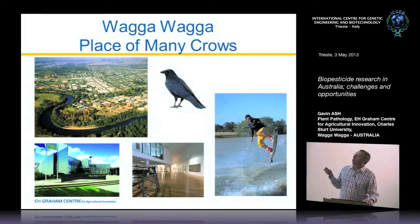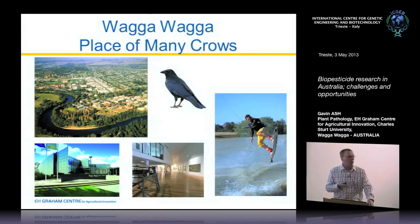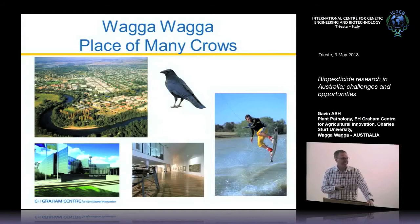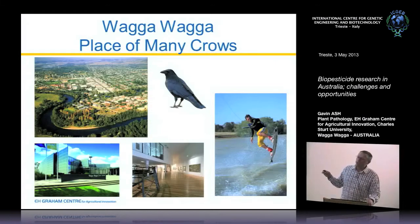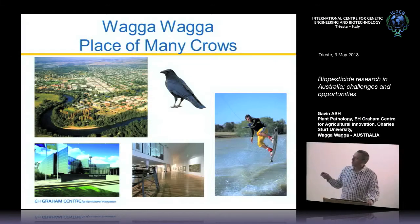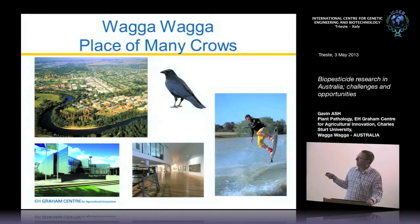They called it Wagga — a crow — and Wagga Wagga means many crows. So Wagga Wagga is the place of many crows, and we do have a lot of crows. We have other things too: kangaroos, wombats, but also crows. It's a small regional city of about 65,000 people on the Murrumbidgee River, and we have a lot of water sports in the area.